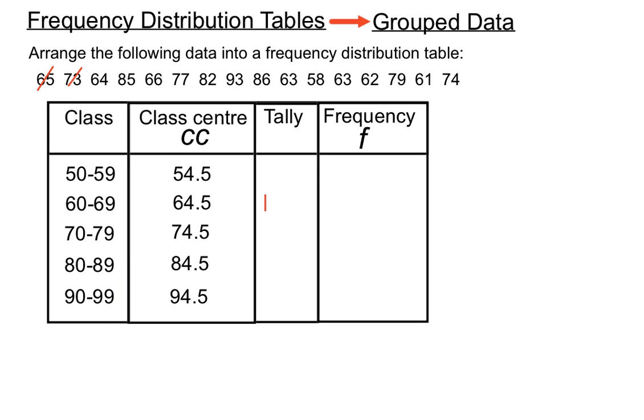65 is between 60 and 69, so we'll put a tally mark on that one. We'll just ignore the class centers for now. We're really focusing on these classes here and whether the individual scores belong to each of those classes. So we'll cross off 73 and put a marking down in the 70s. 64 is another tally mark for the 60s. 85 is in the 80s obviously. We just keep crossing each individual score off and putting a tally mark down in the class that it belongs to. 77, 82, 93, 86, 63 goes in the 60s, 58 goes in the 50s.